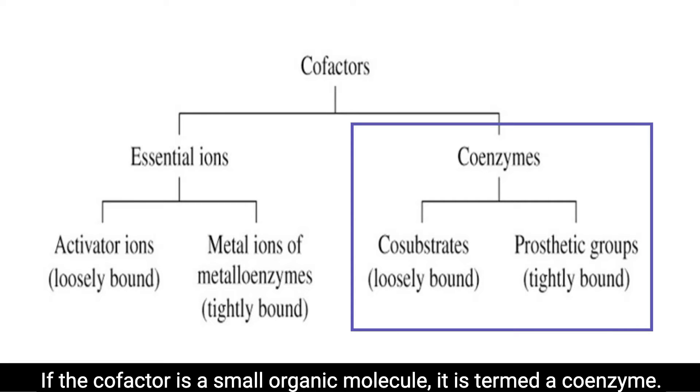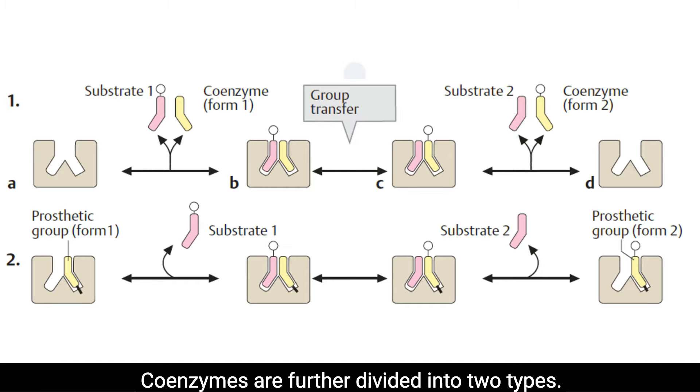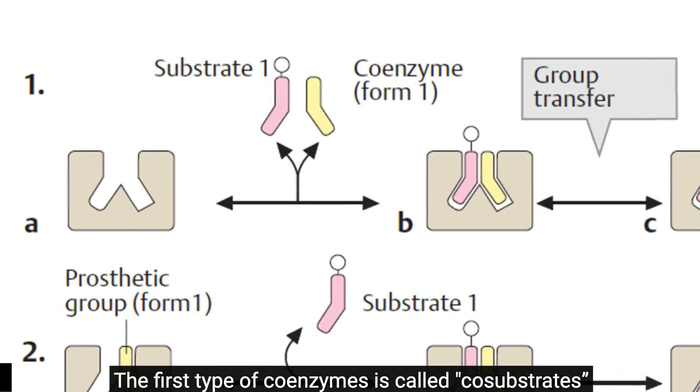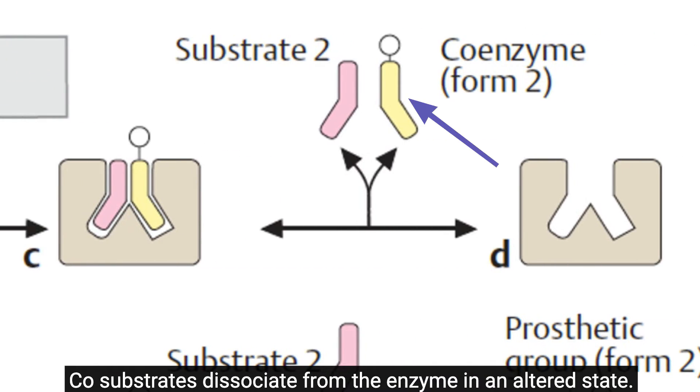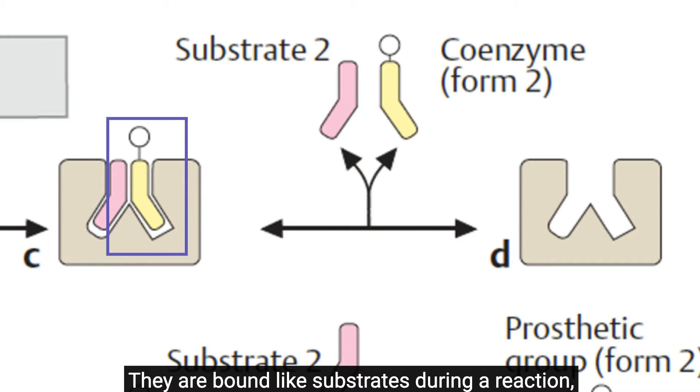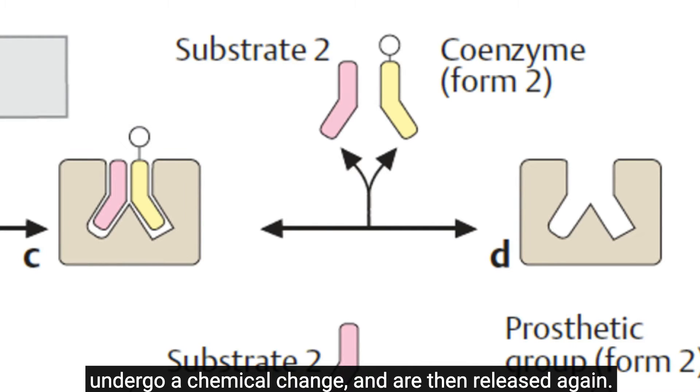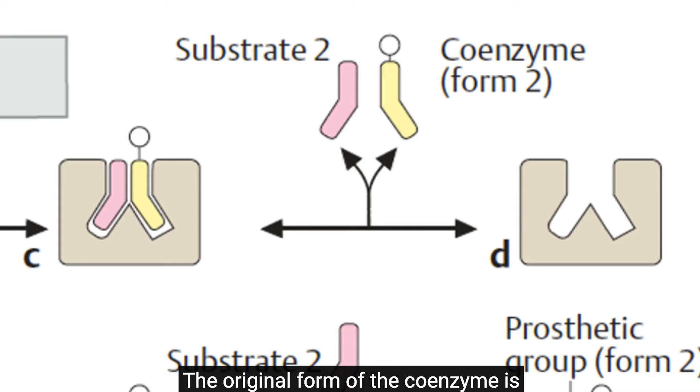If the cofactor is a small organic molecule, it is termed a coenzyme. Coenzymes are further divided into two types. The first type of coenzymes is called cosubstrates and are transiently bound to the protein. Cosubstrates dissociate from the enzyme in an altered state. They are bound like substrates during a reaction, undergo a chemical change, and are then released again. The original form of the coenzyme is regenerated by a second, independent reaction.